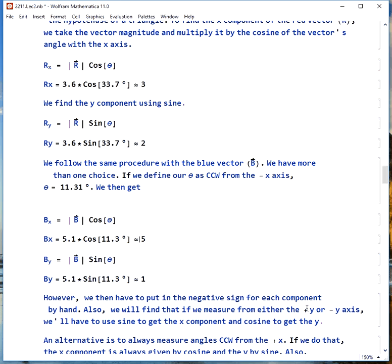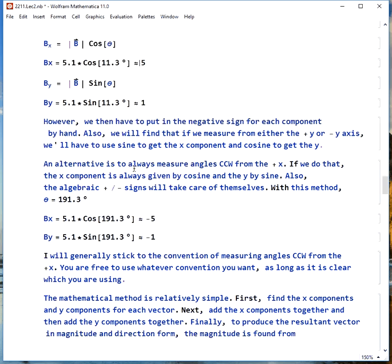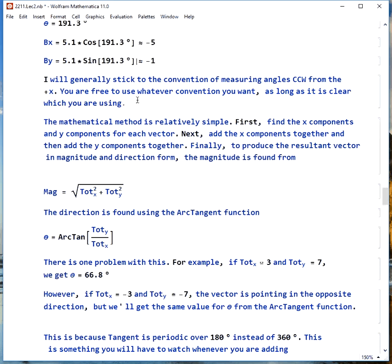Now, if we had measured from the positive y or negative y-axis, then we would have to swap cosine and sine. And that all gets a little bit complicated, so what's a little bit easier, it's almost mindless, but that's not necessarily bad. If we always measure angles counterclockwise from the positive x, then the x component is always cosine and the y component is always sine. We also won't have to worry about the positive and negative signs in front of our components here. If we do that, the angle for the blue vector, instead of 11.3 south of west, it's 191.3. We go around half the circle and then down another 11.3 degrees. When we do this, 5.1 times cosine angle is automatically negative 5, and 5.1 times sine is automatically negative 1. And again, this is a convention that I'm going to stick to.